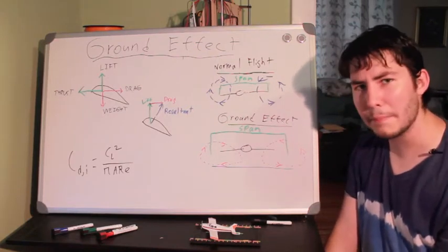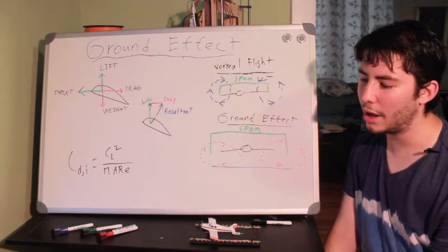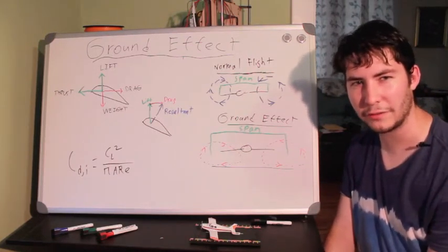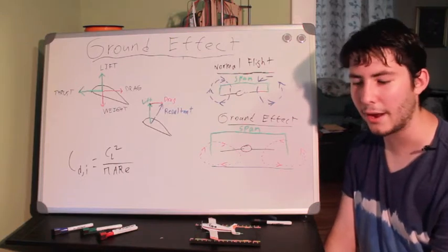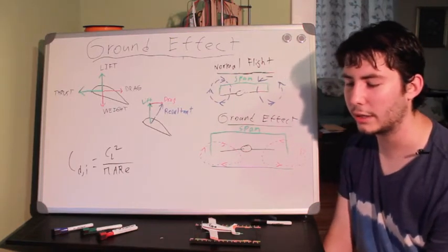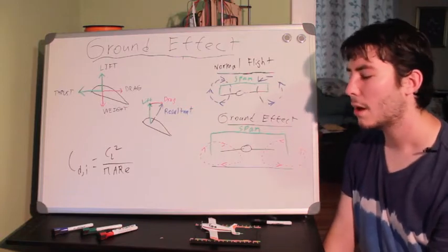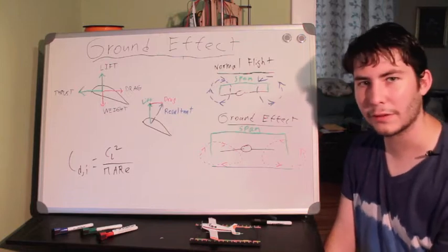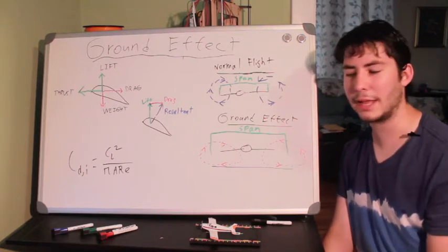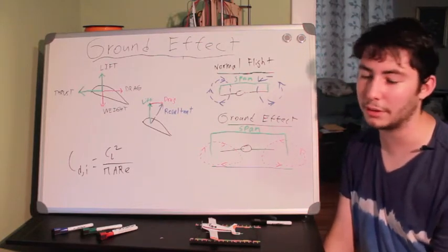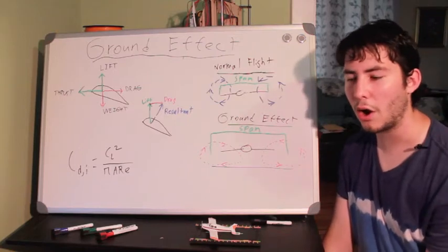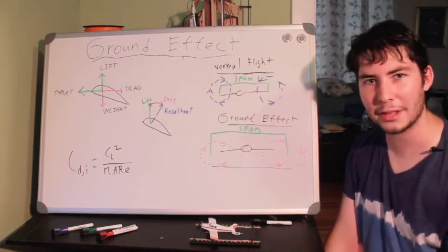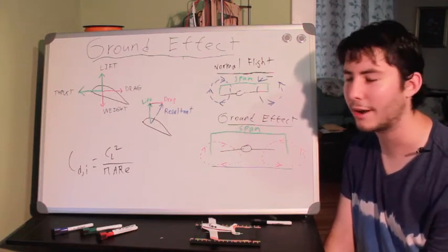But the main issue I have with how ground effect is explained is that people usually talk about the cushion of air idea and they stop there. And that's a good simple way to think about it when you're just flying the plane. But when you want to learn the actual science behind it, it actually really oversimplifies things. The nice thing is that the true explanation, or the various explanations for it, aren't that much more complex than the cushion of air theory. And I think they're a heck of a lot cooler. And they definitely tell you a lot more about how the aircraft works as a whole.